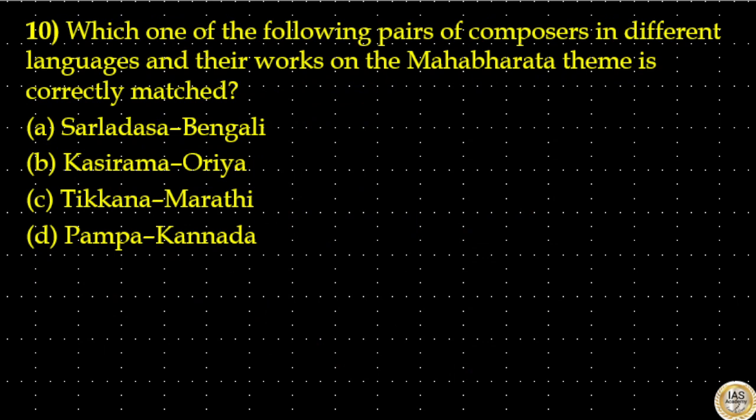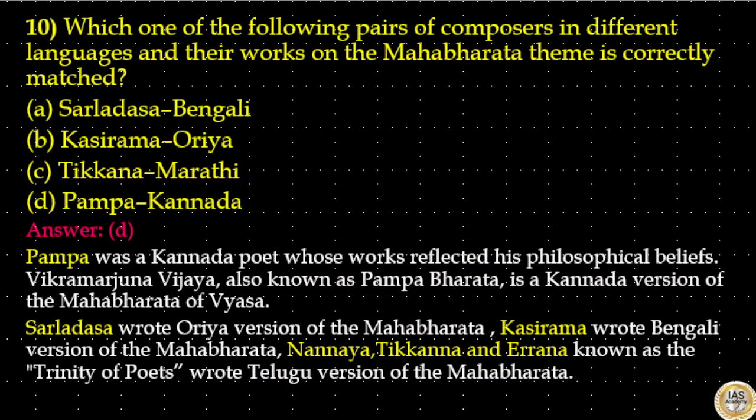Which one of the following pairs of composers in different languages and their works on the Mahabharata theme is correctly matched? Option A: Sarladasa — Bengali (incorrect). Option B: Kashirama — Oriya (incorrect). Option C: Tikkana — Marathi (incorrect). Option D: Pampa — Kannada (correct). The answer is option D: Pampa, Kannada. Pampa was a Kannada poet; his work Vikramarjuna Vijaya, also known as Pampa Bharata, is a Kannada version of the Mahabharata. Sarladasa wrote the Oriya version; Kashirama wrote the Bengali version; and Nannaya, Tikkana and Eranna — known as the Trinity of Poets — wrote the Telugu version of the Mahabharata.